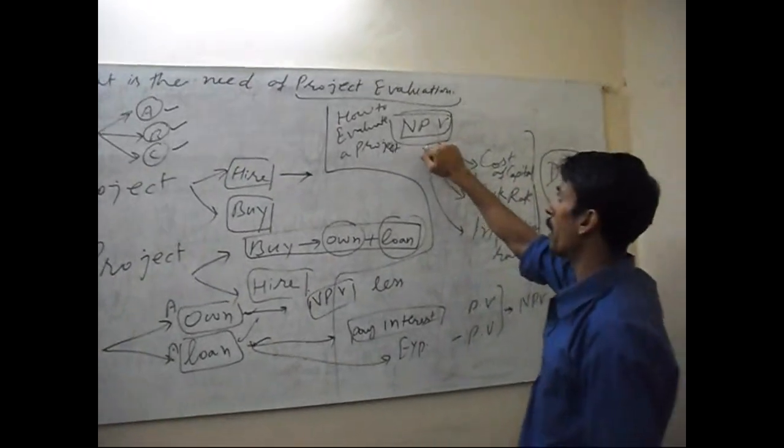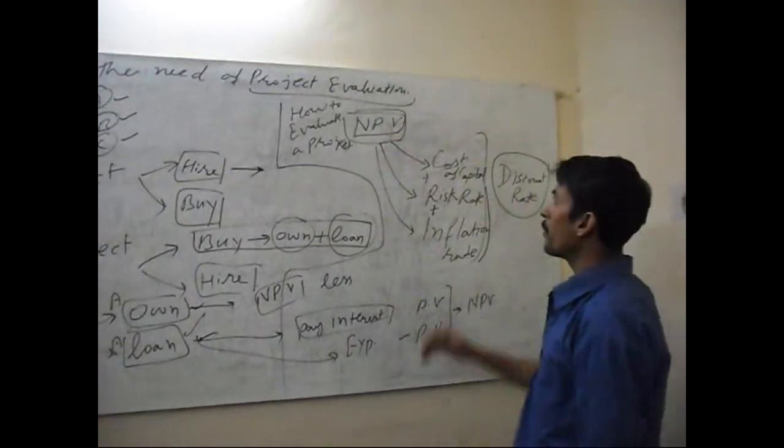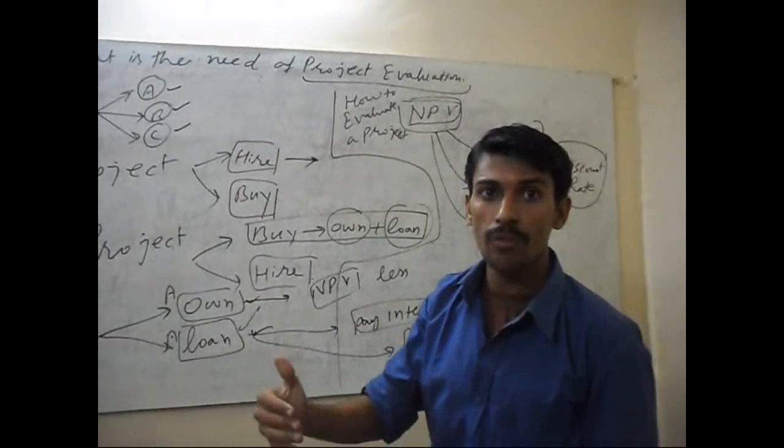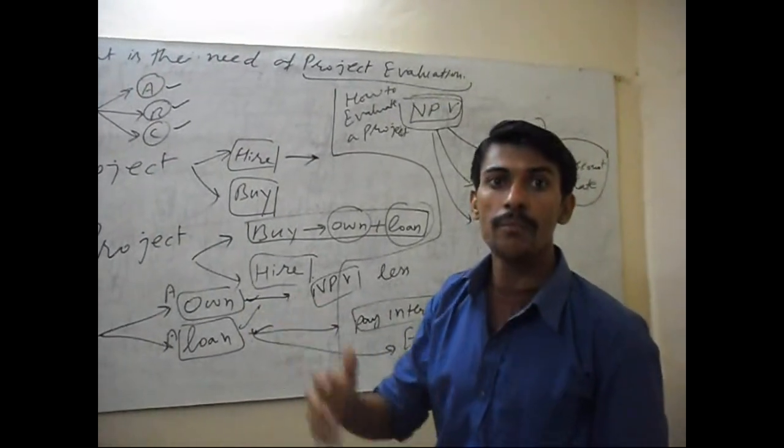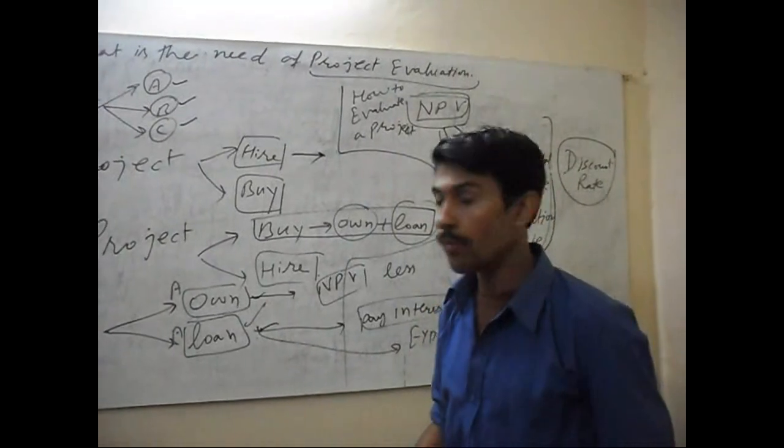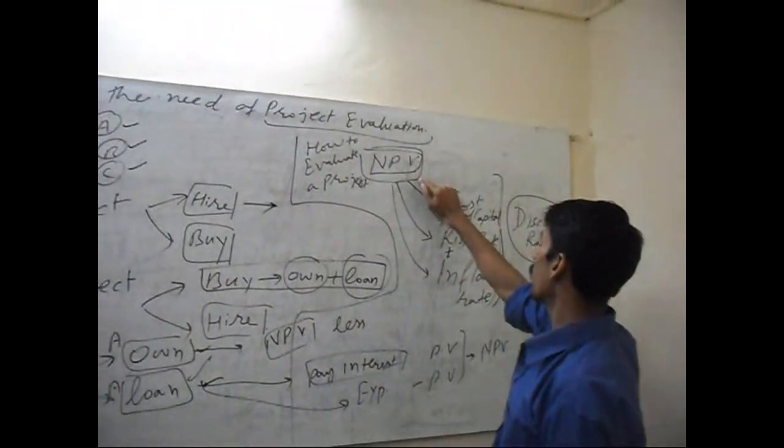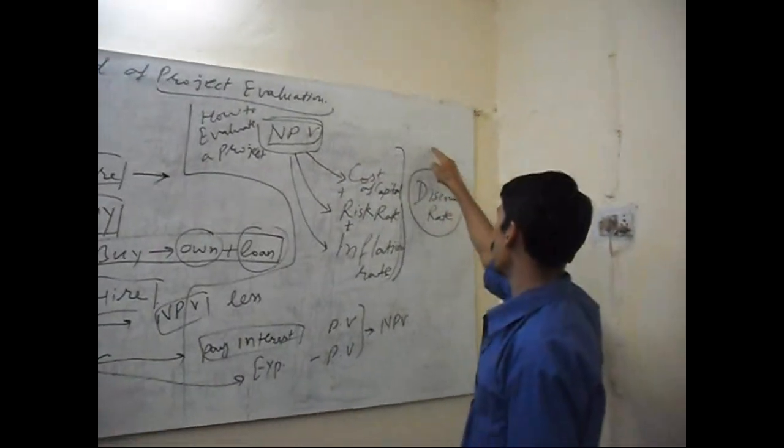NPV is the excess of present value of cash inflow over present value of cash outflow. So in calculating present value, we need discount rate.